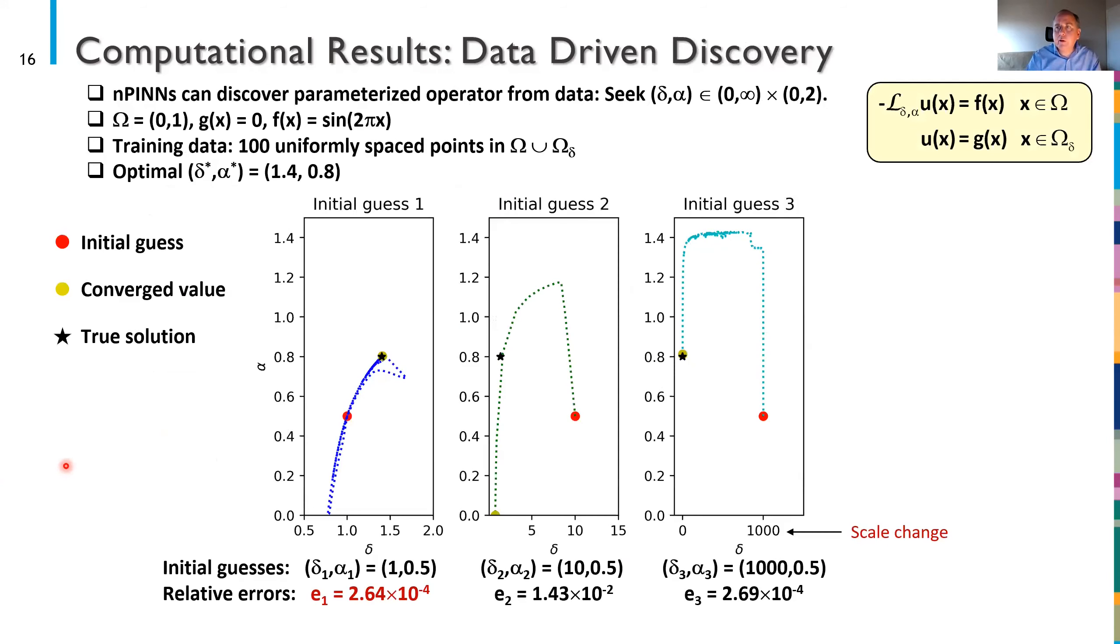So that's kind of running PINNs in forward mode. Let's go to the more interesting case where we're trying to do data-driven discovery. What we're going to do then is try to seek an optimal δ and α given some training data and given a particular right-hand side, in this case training only on about 100 uniformly spaced points. So what we're going to do here is manufacture data with some optimal δ star and α star and here are the choices that were picked.